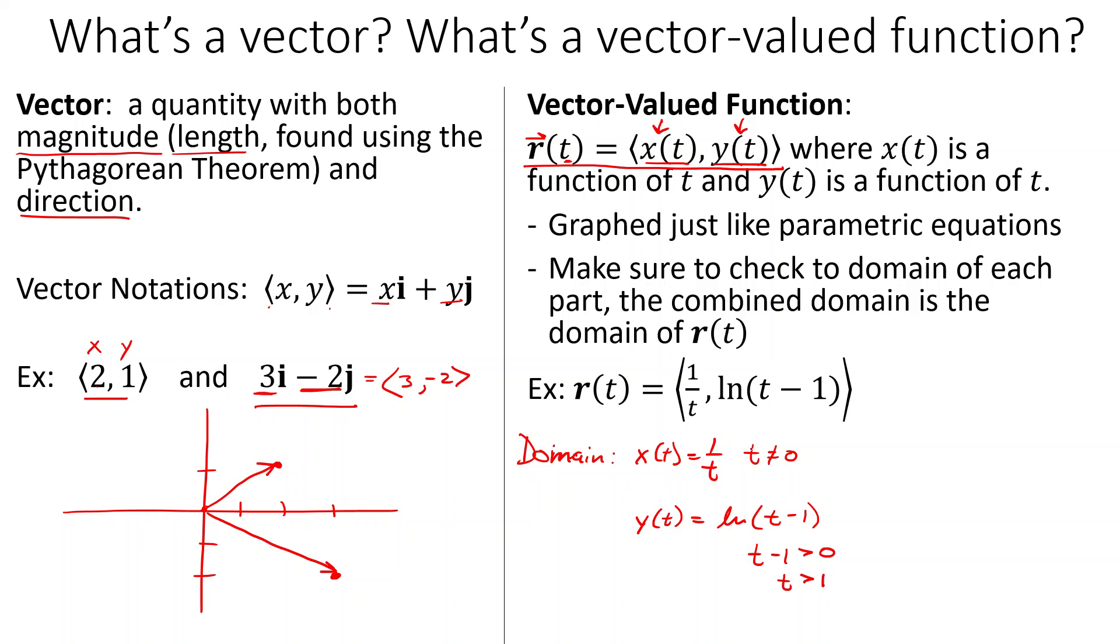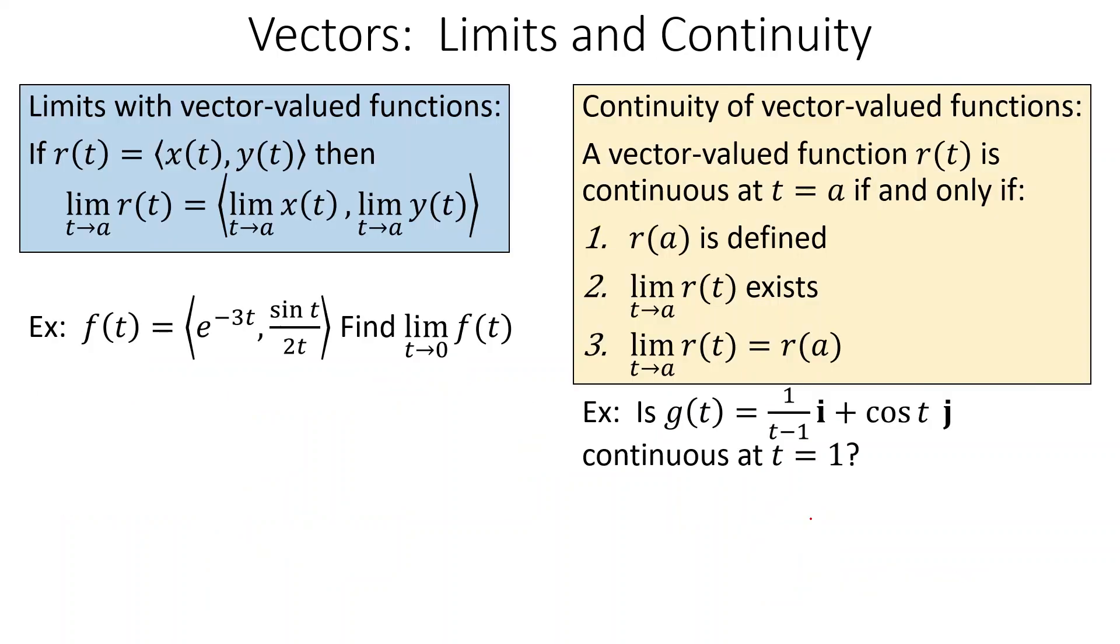So when we look at these two things together, we say, okay, well, here, t can be anything but zero. But this guy is telling us it's got to be greater than one. All right, so we go with basically the intersection of the two or the more restrictive of the two. In this case, t greater than one is the domain for this vector-valued function up here. All right, so limits.